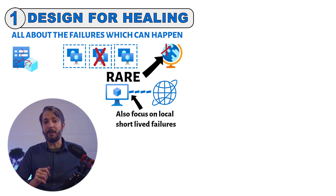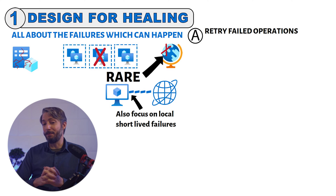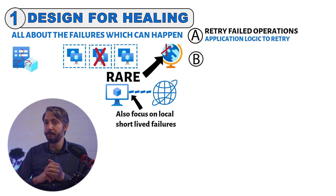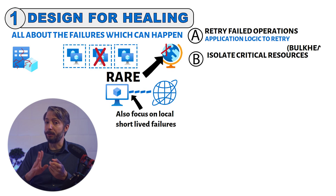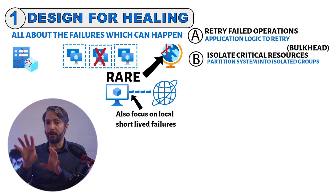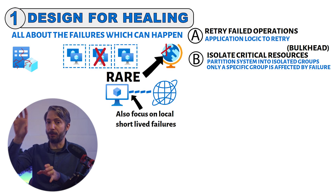There are a couple of key points that you can do to handle this. For example, configure the application to retry failed operations — which is, in my opinion, the most important one. Whenever there is a momentary loss of connectivity or a timeout, the application needs to have logic to retry. Try to isolate critical resources — the terminology in application design is called bulkhead. Failures in one subsystem can cascade and lead to resource exhaustion in other areas, so you need to partition a system into isolated groups so that only the specific failing group doesn't affect all the other ones.